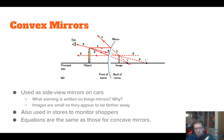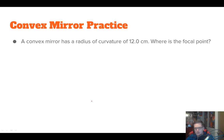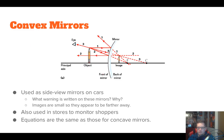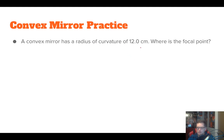Because it's still a mirror, we can use the same equations. Practice problem: a convex mirror has a radius of curvature of 12 cm. The focal point is half the radius, so F = 6 cm. But because it's on the back side of the mirror, it's negative, so F = −6 cm. The front of the mirror is the reflecting side; since the focal point is behind it, it must be negative.